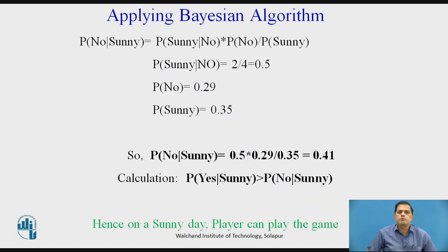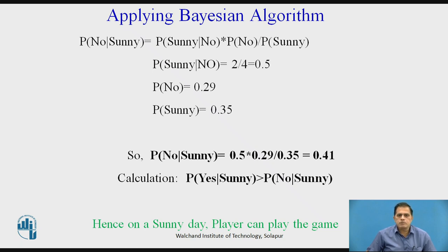Next, we calculate probability of no given sunny. P(sunny|no) = 2/4 = 0.5. P(no) = 0.29 and P(sunny) = 0.35. So P(no|sunny) = 0.5 × 0.29 / 0.35, which equals 0.41. Since P(yes|sunny) = 0.60 is greater than P(no|sunny) = 0.41, we find the solution: on a sunny day, the player can play the game.